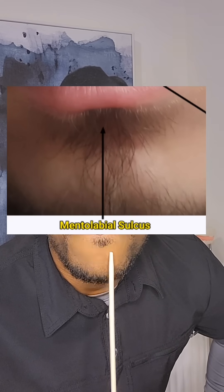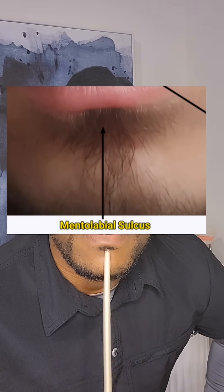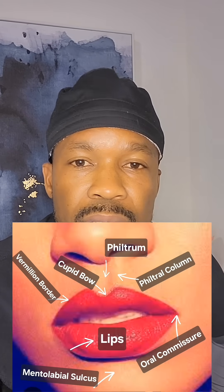Moving on, this little indentation right here — this is called the mentolabial sulcus. Just to clarify, this area is the chin. There are a few things that we all need to know.